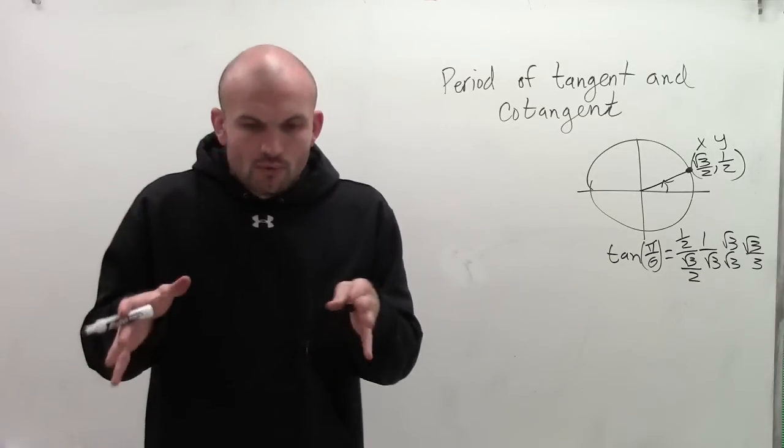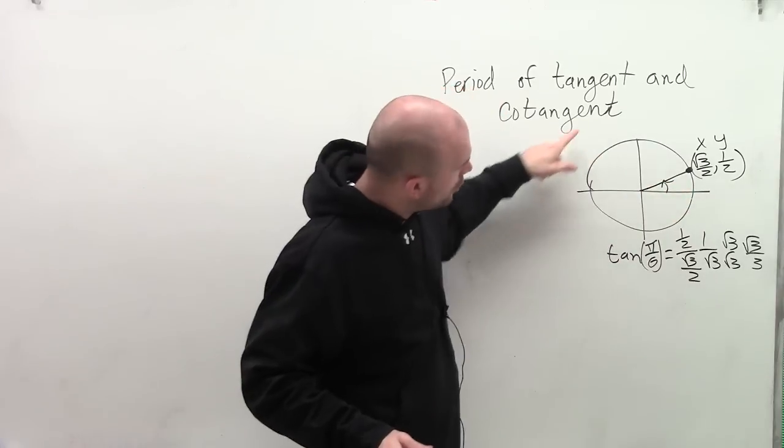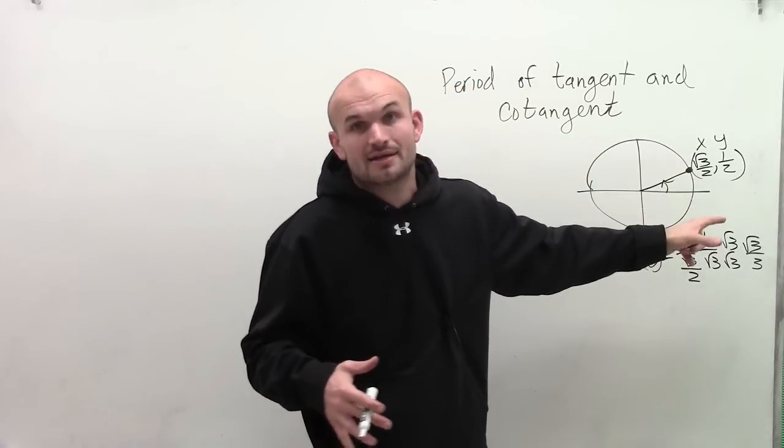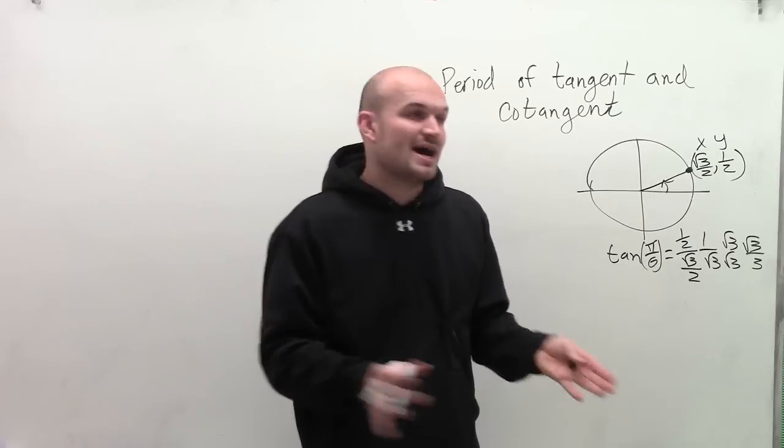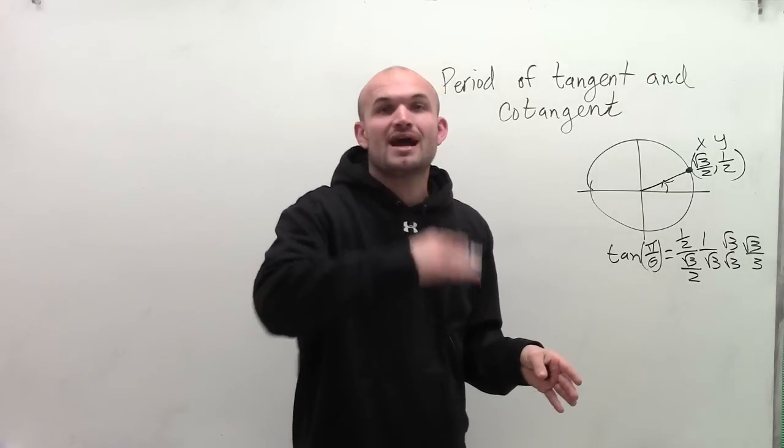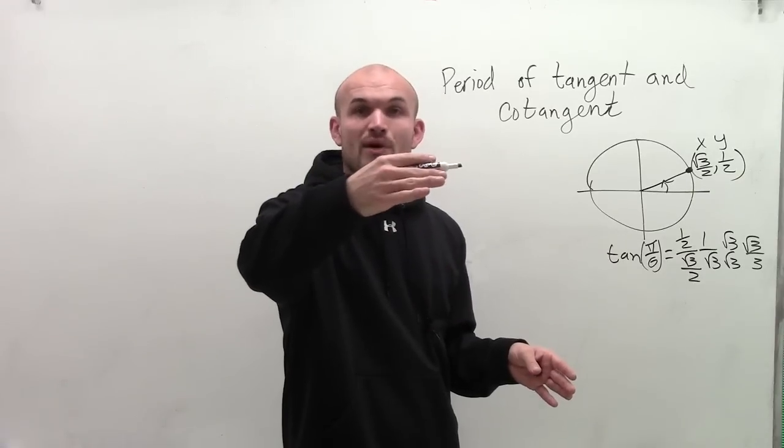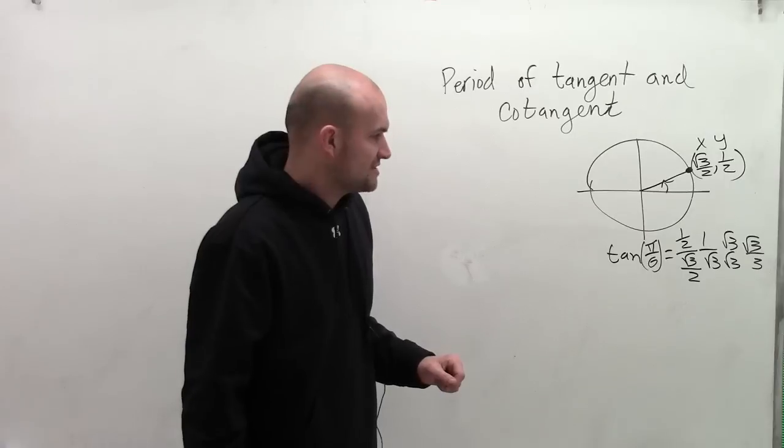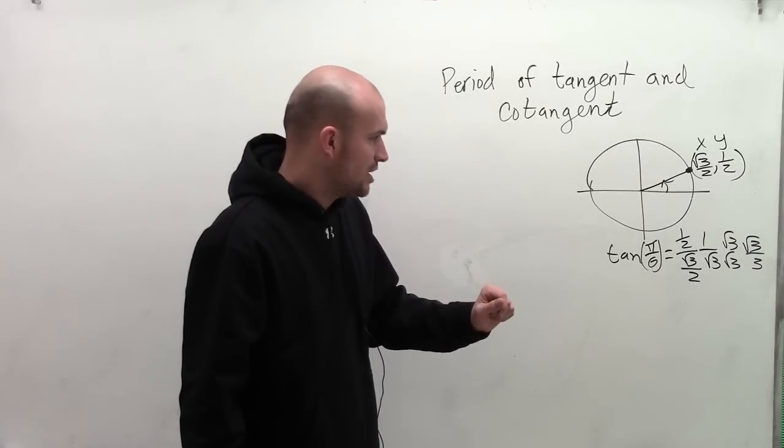Now, when dealing with sine and cosine, it took us to go all the way around the circle before we started repeating values for sine and cosine. So that's why the period was 2 pi. And you can notice that when looking at the graph, it had to go a distance of 2 pi before the graph started repeating again. So we look at tangent of pi over 6, which is square root of 3 over 3.